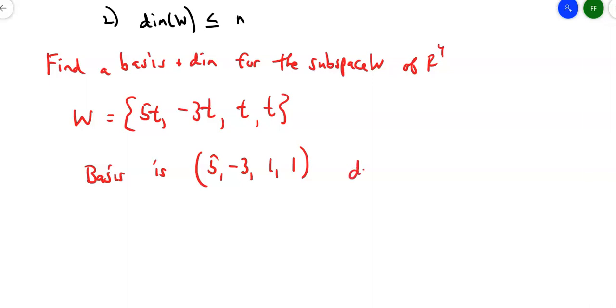Anything in W can be written as a linear combination of those four elements in that order in that vector. Because there's only one vector in the basis, the dimension then is 1.